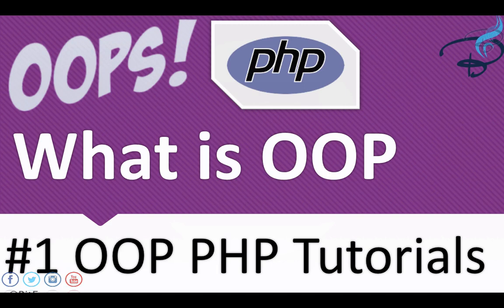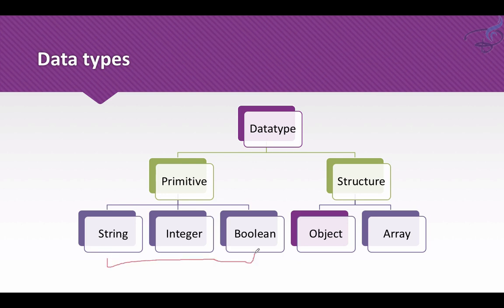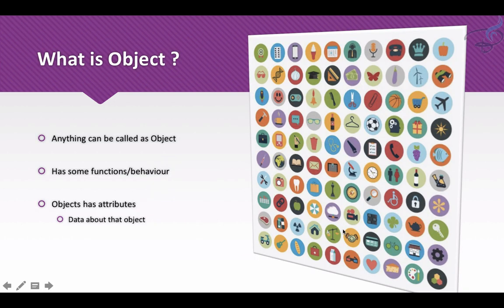The question comes to mind: what is OOP, that means object oriented programming? Before that, let's see how this object concept came about. We have data types, and these data types are divided into two basic categories called primitive and structure. The structure type has object and array — and this object type is going to be used in object oriented programming.